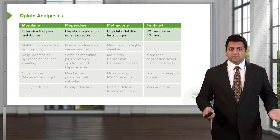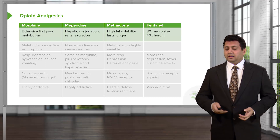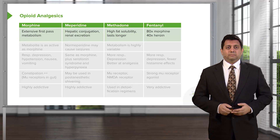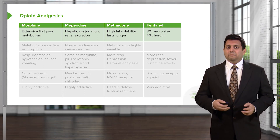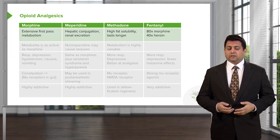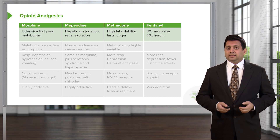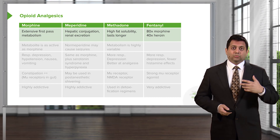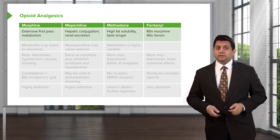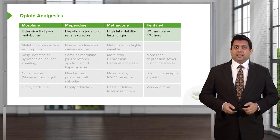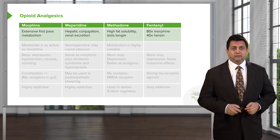Morphine has extensive first-pass metabolism, so if taken orally it can be very inactive because most of it will get dumped into the bowel. Meperidine has hepatic conjugation and renal excretion. Methadone has high fat solubility — this is important because we tend to use this for detoxification programs, so given once, it will stay in the body for a long time. Fentanyl is a very potent opioid — it is 80 times more powerful than morphine and 40 times more powerful than heroin.